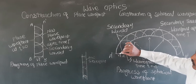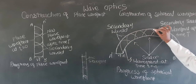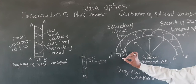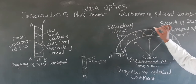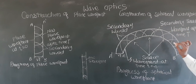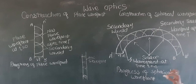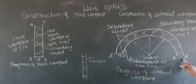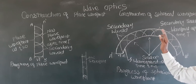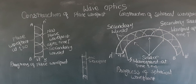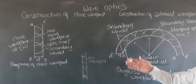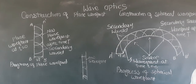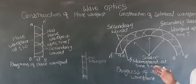The envelope drawn to all these hemispherical wavelets at time t will represent the new spherical wavefront at that time t. So A'B' is the new spherical wavefront. Using Huygens' Principle, we saw how the new plane wavefront and new spherical wavefront are formed.